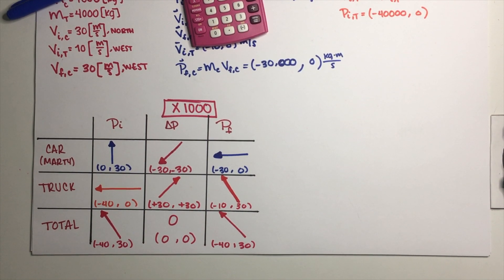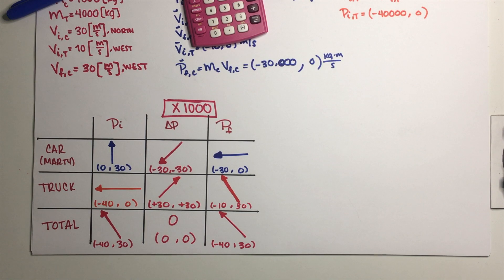This basically finishes our problem. The question was to create a complete momentum chart, and it's now complete — with everything scaled by 1000 to avoid writing zeros everywhere. I hope this was useful to you. Feel free to give it a try yourselves. I'll see you guys in the next video. Bye.